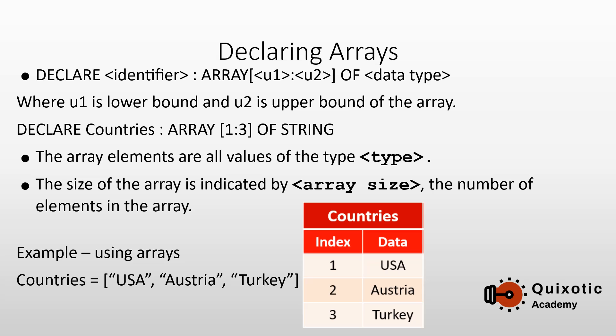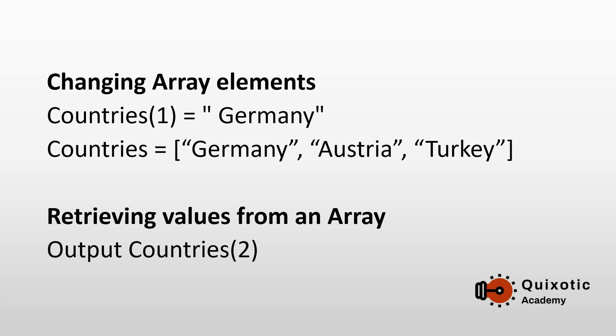The lower bound of the array is 1 and the upper bound is 3. The array is of type string. The value USA would be assigned to the first element, Austria to the second, and Turkey to the third. Values in elements can be overwritten at any point simply by assigning another value to that element.